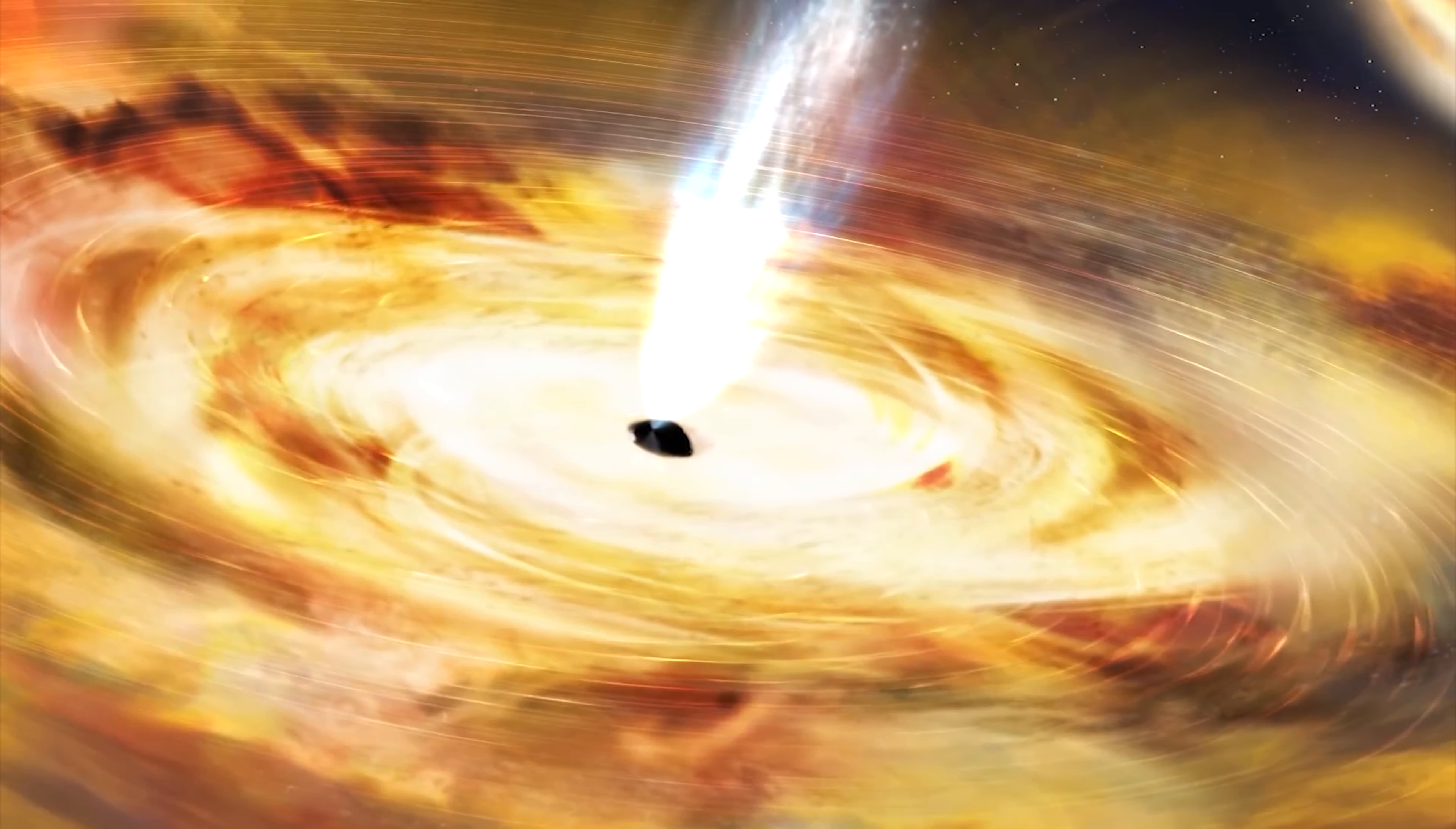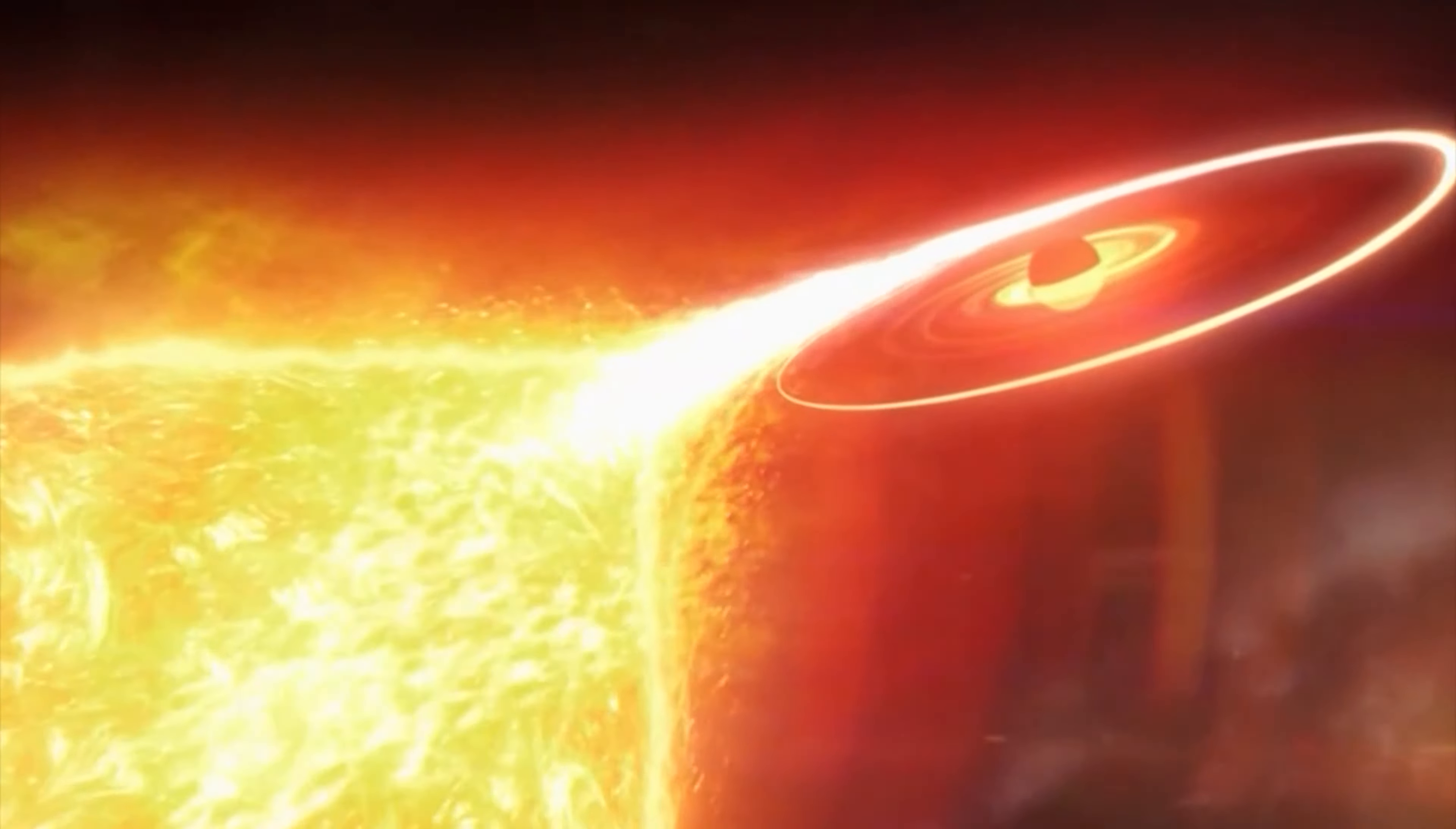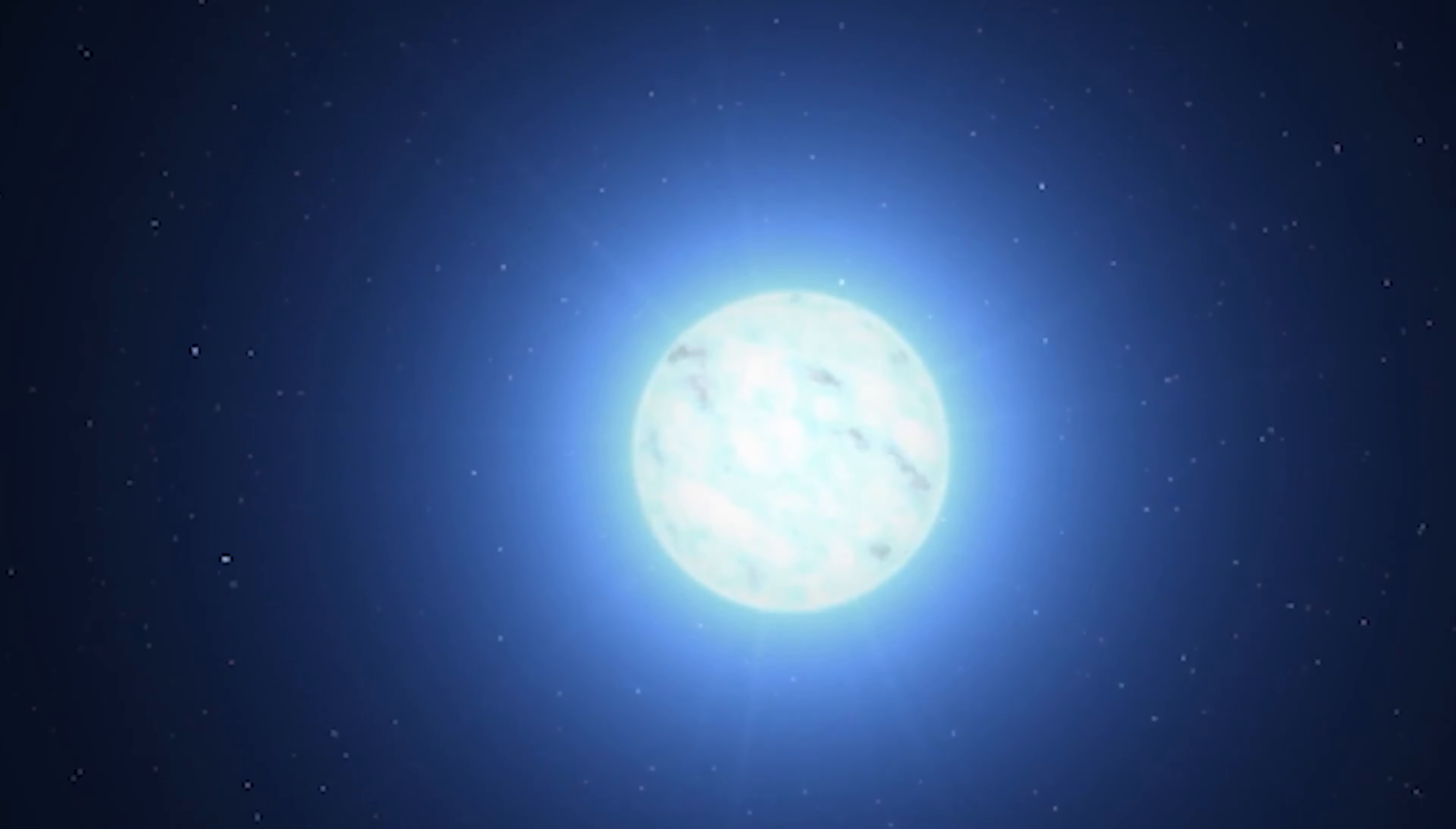The black hole would be growing and gradually approaching the Sun. Maybe the black hole would suck up the Sun, leaving only the nucleus. And the remaining nucleus would become a white dwarf star orbiting the black hole.